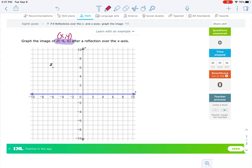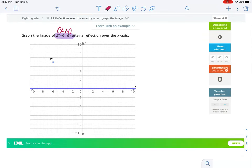So to reflect this across the x-axis, we need to be able to fold the top half of the graph over on the bottom half of the graph and have Z line up with its reflection point on the other side of the x-axis.